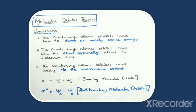The combining atomic orbitals must have the same or nearly the same energy. Another condition is that the combining atomic orbitals must have the same symmetry about the molecular axis. And the third condition is the combining atomic orbitals must overlap to the maximum extent.